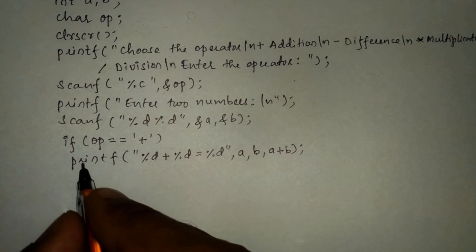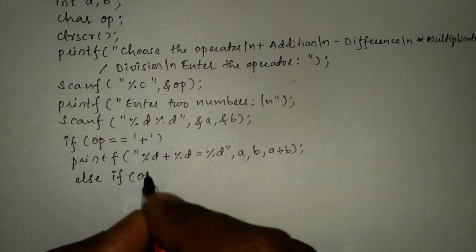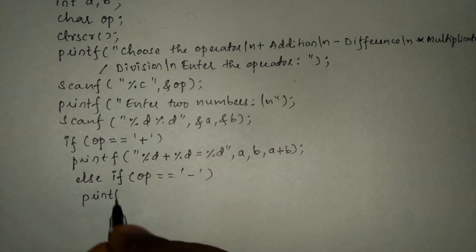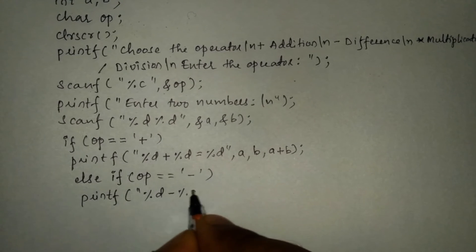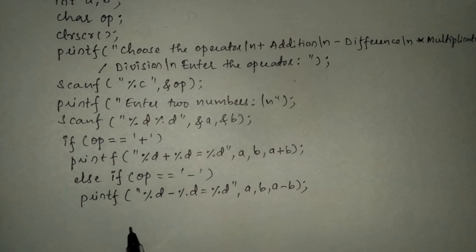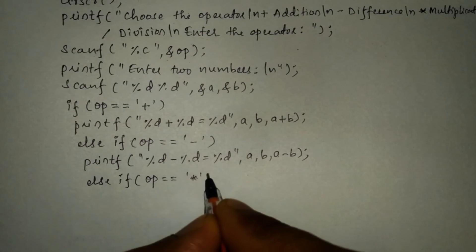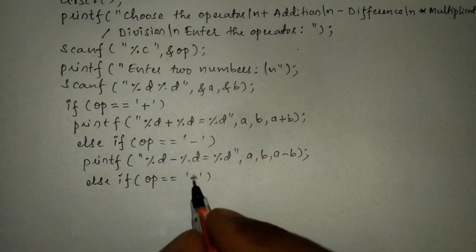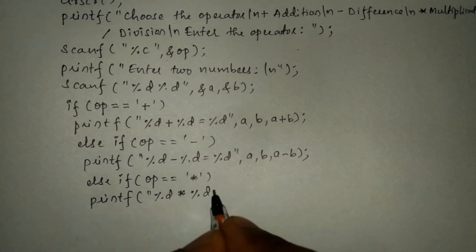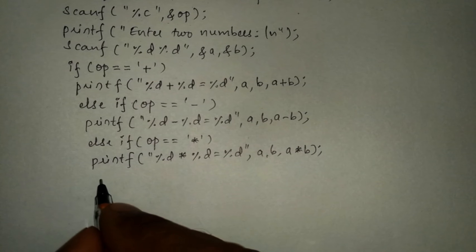Similarly, we check the difference operator using else-if with op equals minus in single quotation marks. If true, it prints '%d - %d = %d' with a, b, and a minus b. Next, for multiplication, we use else-if with op equals asterisk and print '%d * %d = %d' with a, b, and a multiplied by b, then a semicolon.